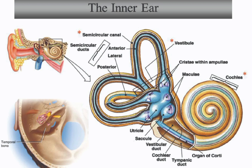Vestibular system is a complex system of canals and pouches that help to maintain balance and spatial orientation. The main function of the inner ear is to detect and process sound and to maintain balance and orientation. Sound vibrations are transmitted through the oval window and create fluid waves in the cochlea. The hair cells in the cochlea detect these waves and convert them into electrical signals, which are then transmitted to the brain through the auditory nerve. The vestibular system detects changes in head position and movement, which is important for maintaining balance and spatial orientation. This information is also sent to the brain for processing and coordinating.